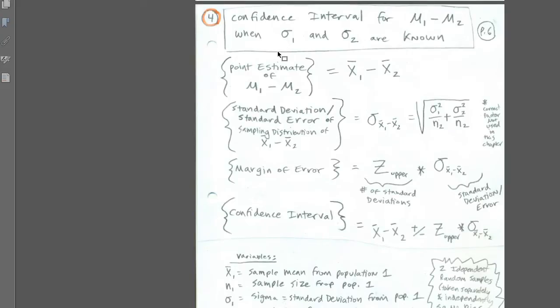In this video, we want to talk about building a confidence interval for a population difference when sigma for both of the populations are known. Remember, throughout this whole class, when sigma is known, we use z. If it's not known, we use t. So we'll get to use z in this video.